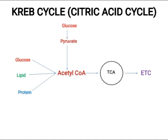This pyruvate oxidation process, in eukaryotic cells, occurs in the matrix of the mitochondria. But in prokaryotic cells, since they don't have membrane-bounded organelles or mitochondria, this pyruvate oxidation process occurs in the cytoplasmic region of bacteria.